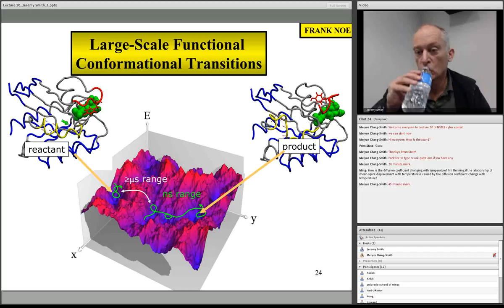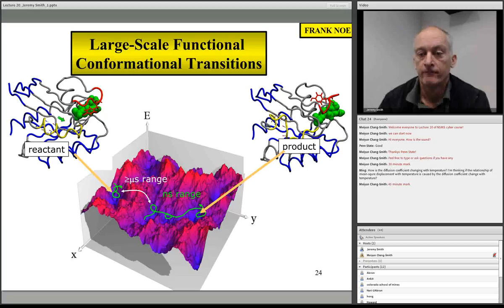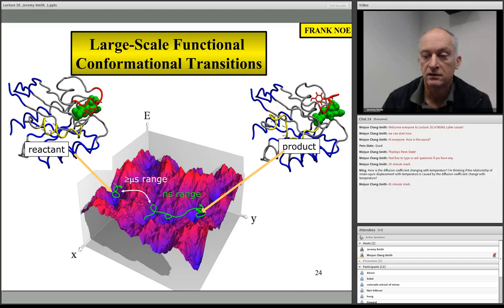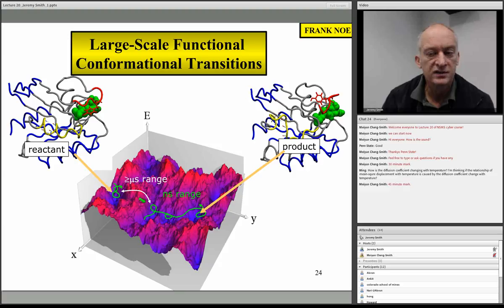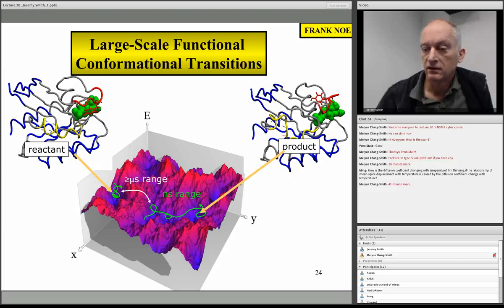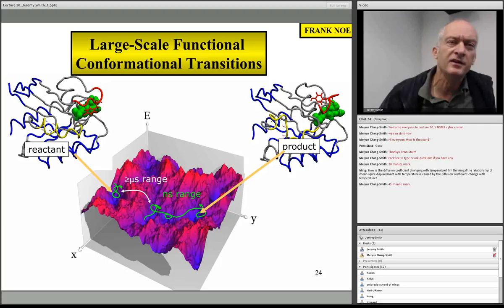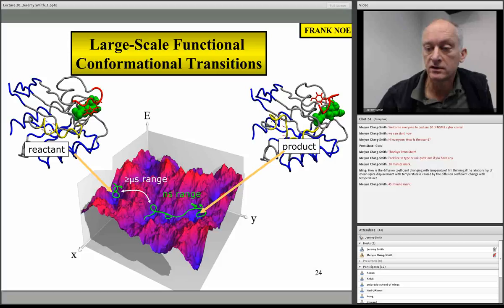RAS is a molecular switch that switches from one state to another depending on whether ATP or ADP is bound. Dynamically, the system moves from a reactant on the energy landscape over a mountain range to a product — roughly a microsecond timescale. Neutrons can access the nanosecond motions and provide invaluable clues. When switched on, the cells grow and tumors get bigger; when switched off, tumor growth stops.